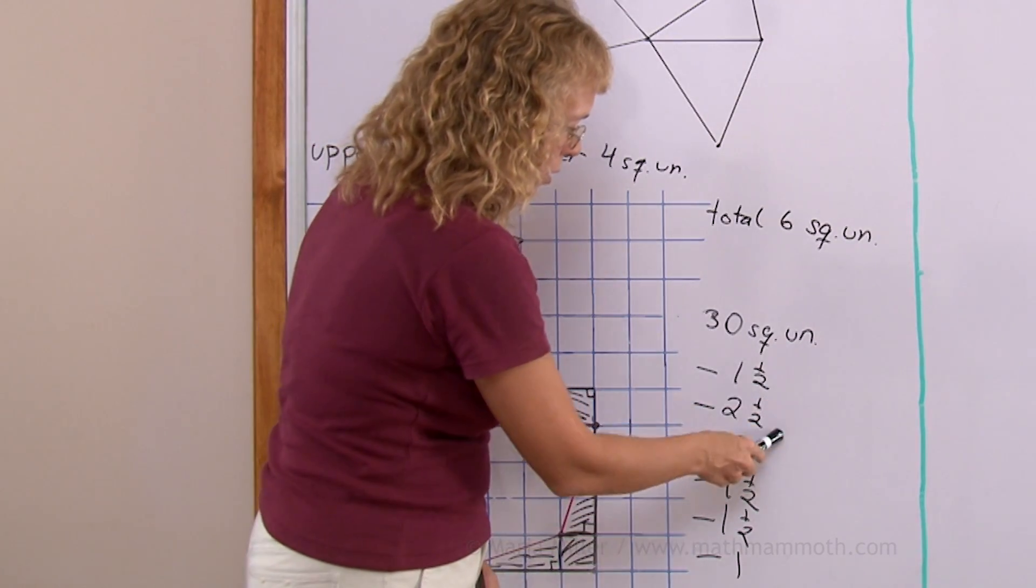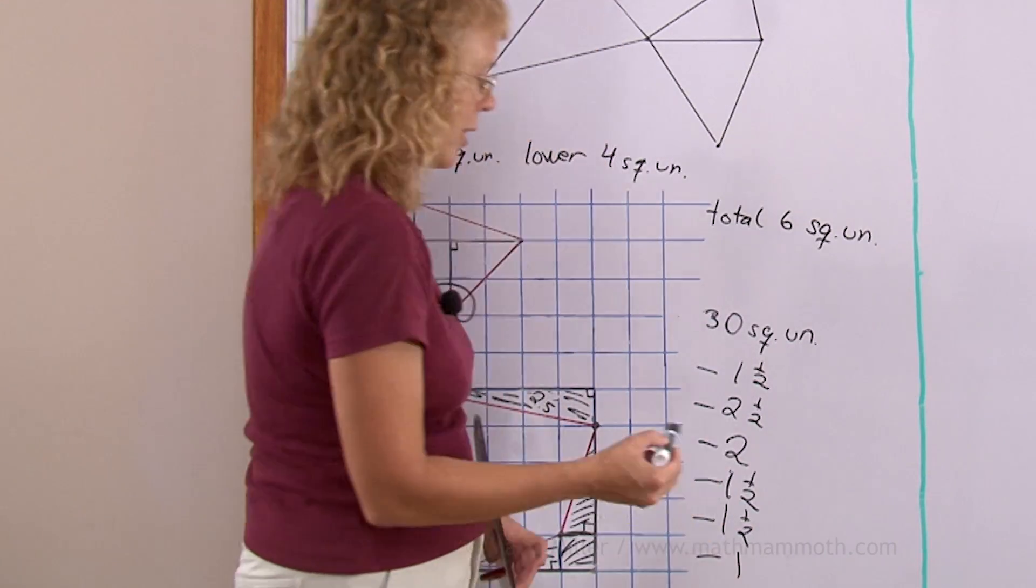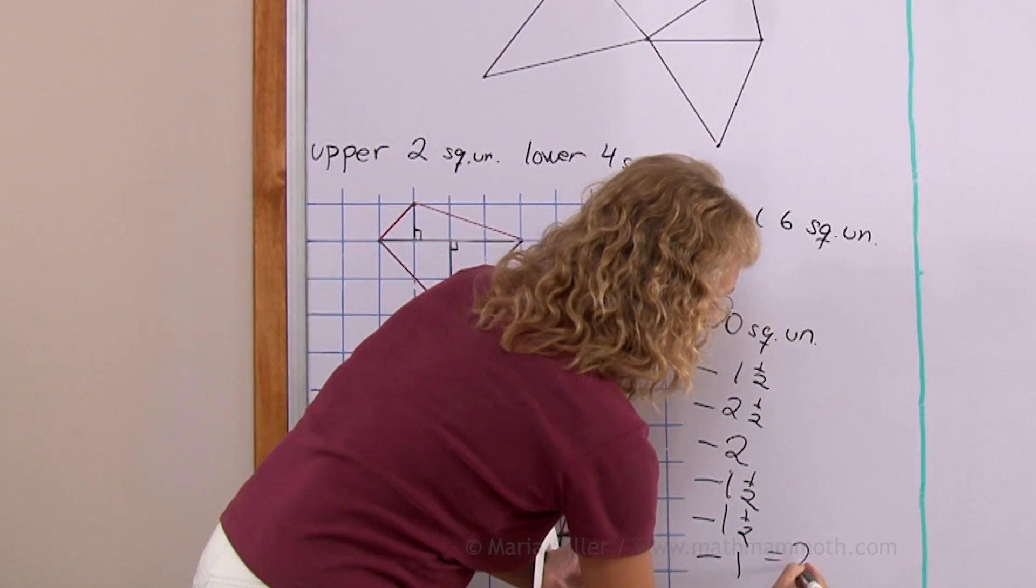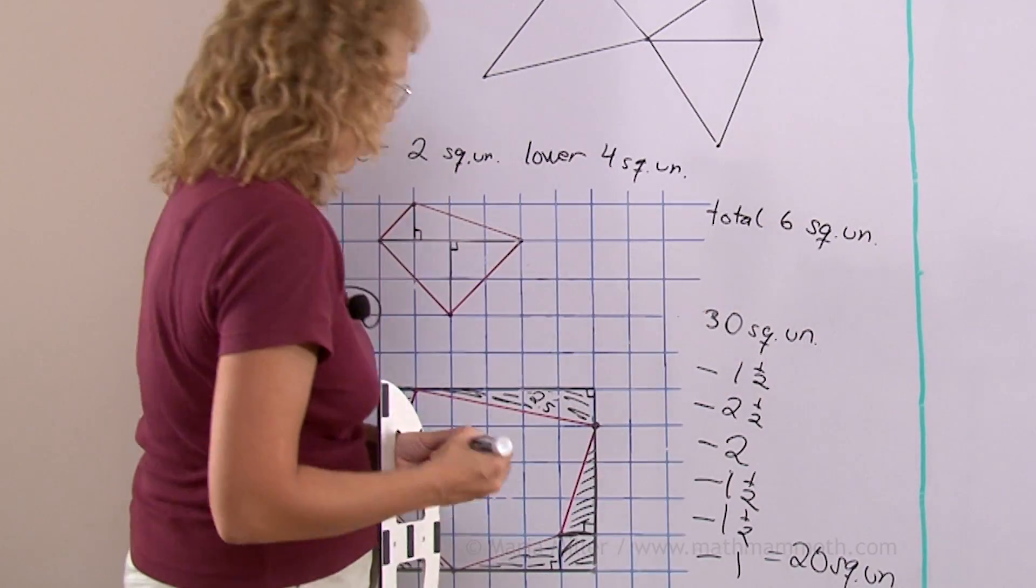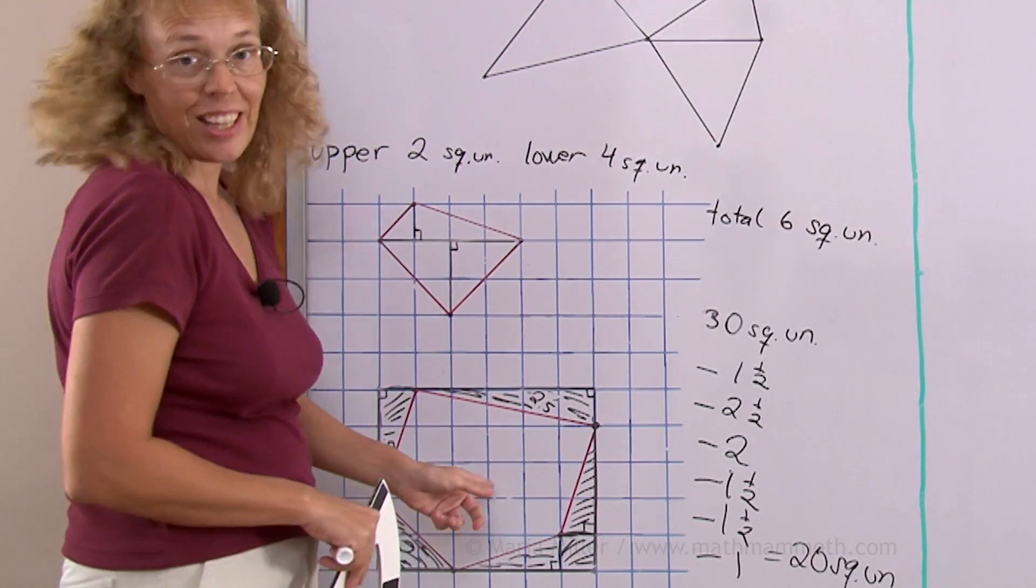Here's four, here's three, seven plus three is ten. So we subtract the total of ten square units and the final answer is therefore 20 square units. Nice even number, I didn't purposefully make it so. I really like this method.